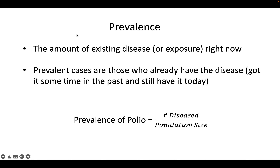Prevalence is the amount of disease in the population right now. It consists of those who got the disease sometime before we arrived and still have it. Reasons someone might have gotten it in the past and not still have it include death or recovery before we arrived. We're not worried about people getting it while we're here because we're taking a snapshot — so it's who has the disease right now.